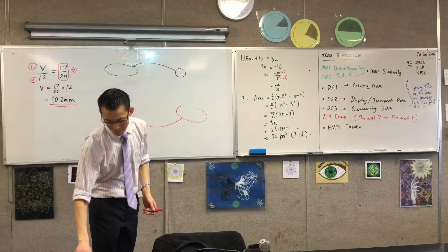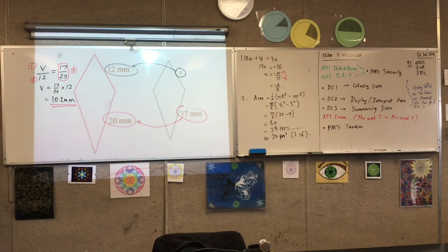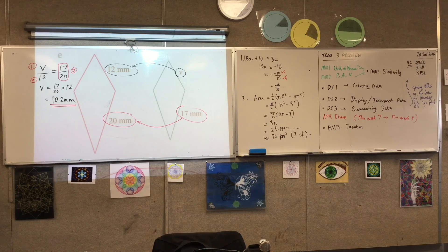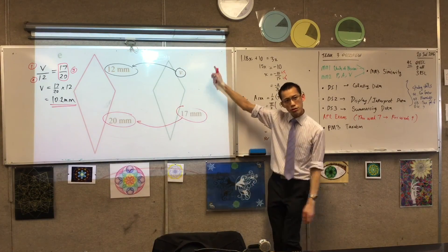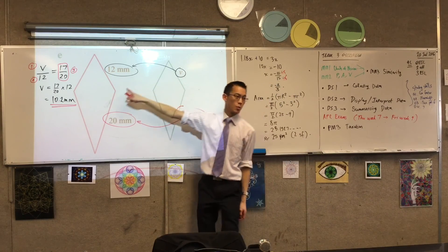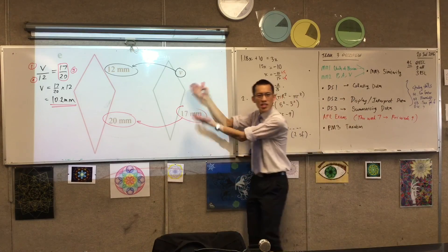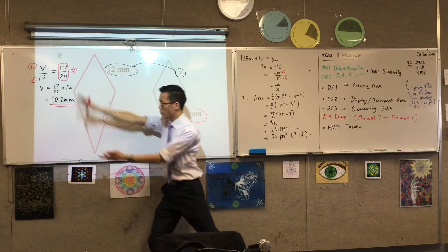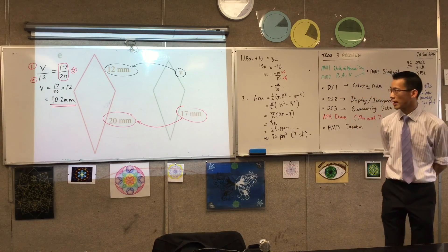Now come back to your diagram. Have a look at this. Before you put pen to paper, when you looked, you knew that V had to be smaller than 12. Do you see why? Because this is the smaller shape to the bigger shape, right? So you're making this comparison. 10.2, it kind of does fit what I'd expect.